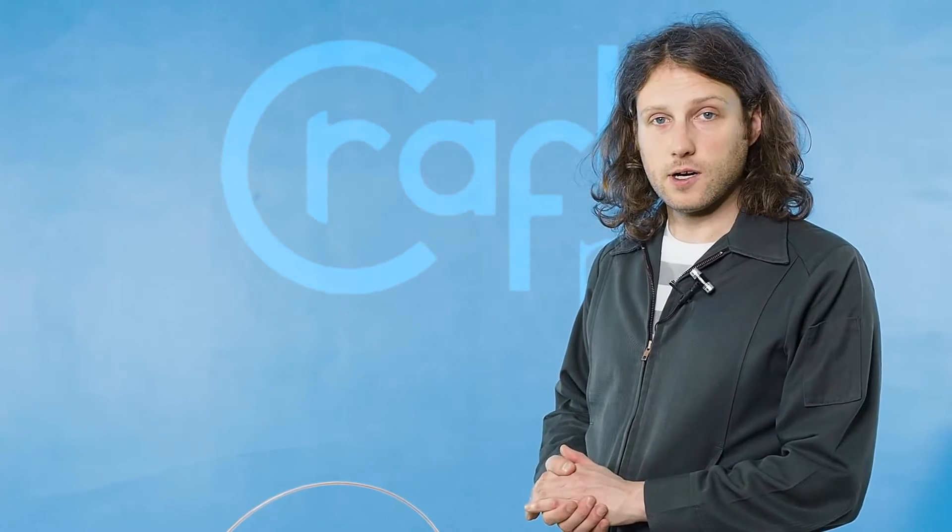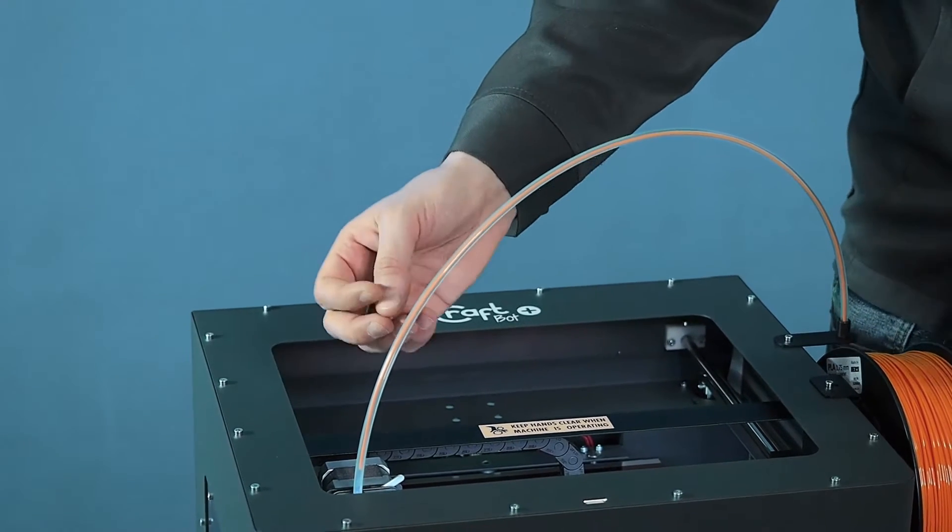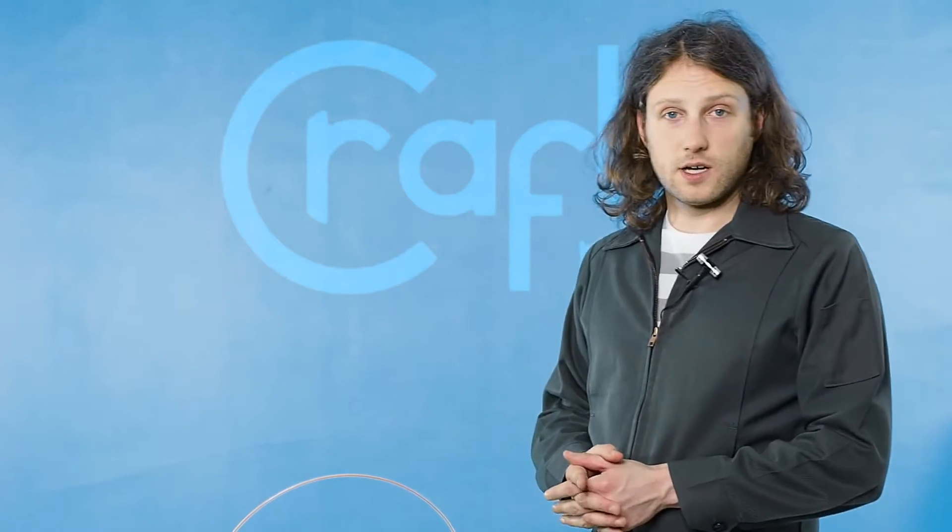That's going to get rid of most of your clogs. The removal of the filament is very important. When you change filaments, you're going to want to heat the extruder up all the way. You're actually going to extrude for about 5 seconds and then immediately reverse and pull the filaments out. And that will prevent a lot of clogs.